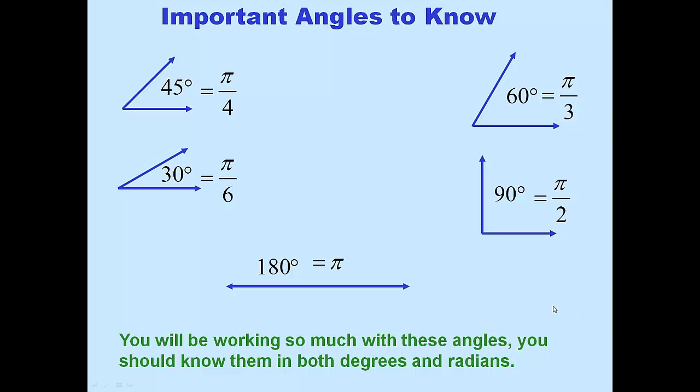Let's look at some critical angles you really need to know and commit to memory — those are the angles between 0 and 180 degrees. A 30-degree angle equals π/6 radians. A 45-degree angle is a fourth of the way to π, so it's π/4 radians. 60 degrees is a third of the way to π, so it's π/3 radians. 90 degrees is halfway to 180, so it's π/2 radians. And very importantly, 180 degrees equals π radians — important for the conversion factor as well.